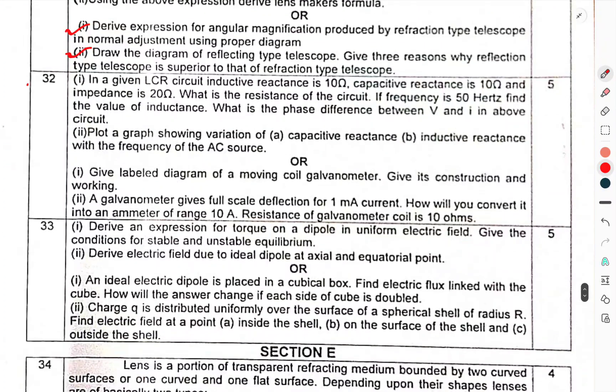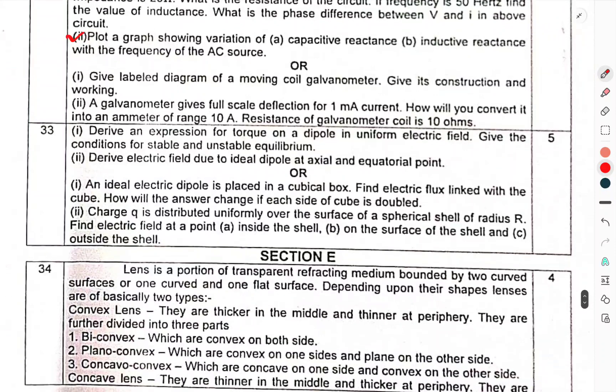Question 32: In the given LCR circuit, inductive reactance is 10 ohm, capacitive reactance is 10 ohm and impedance is 20 ohm. What is the resistance of the circuit? If frequency is 50 Hz, find the value of inductance. What is the phase difference between V and I in the above circuit? Plot a graph showing variation of capacitive and inductive reactance with frequency of AC source. Or, give labeled diagram of moving coil galvanometer, give its construction and working. A galvanometer gives full scale deflection at 1 mA current. How will you convert it into ammeter of range 10 ampere? Resistance of galvanometer coil is 10 ohm.